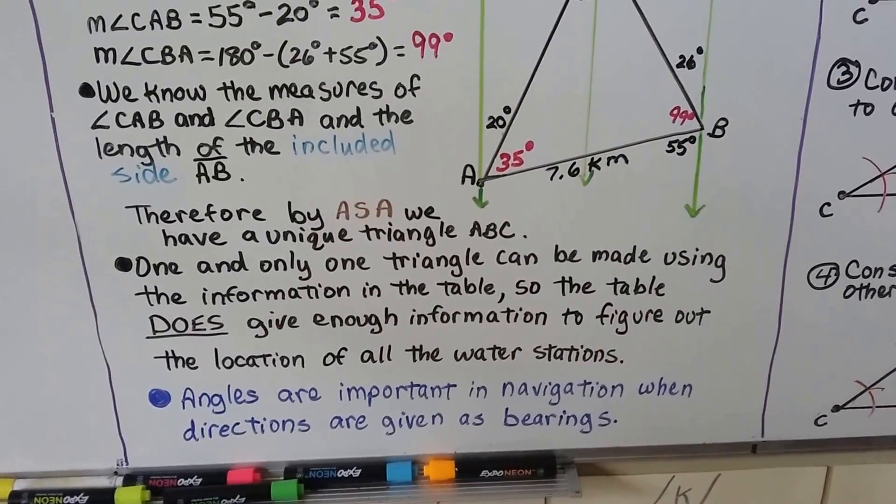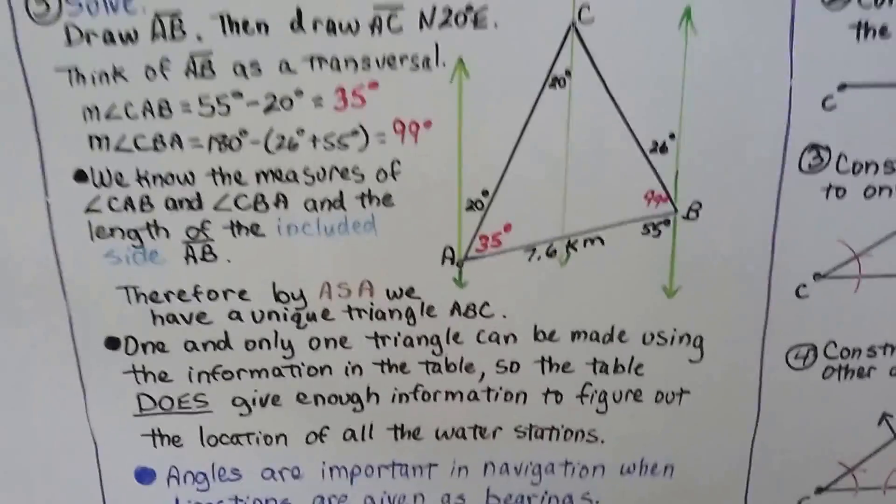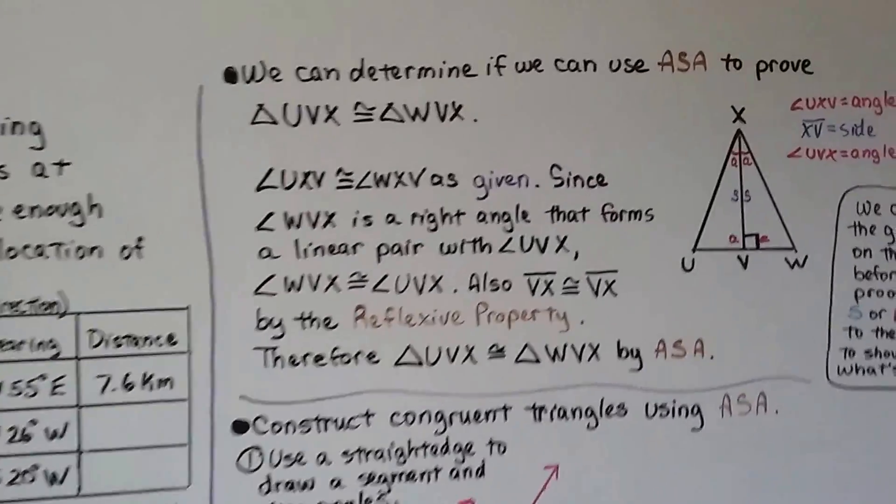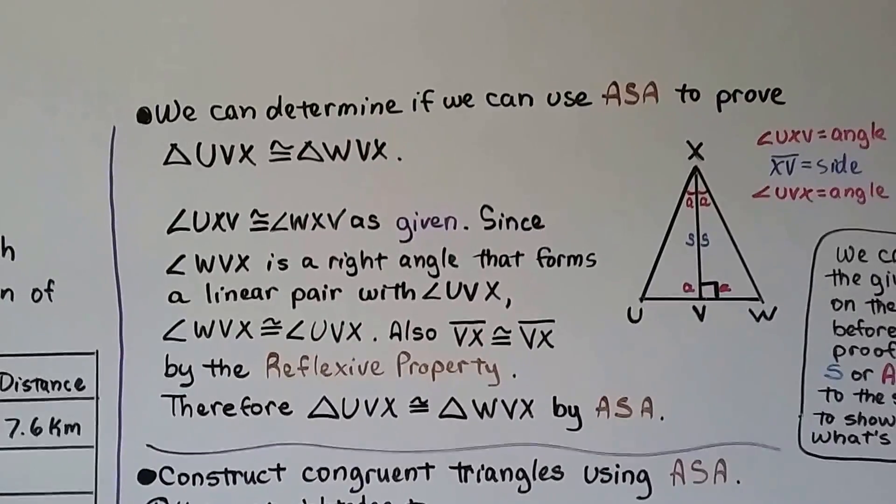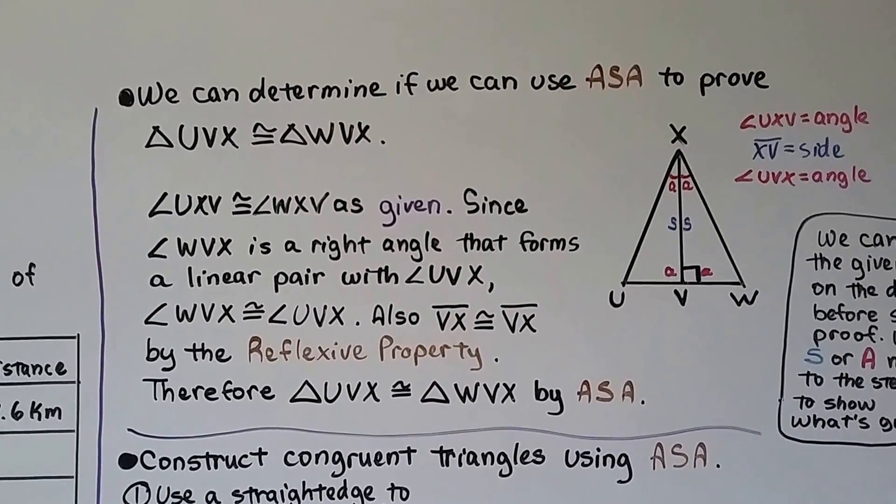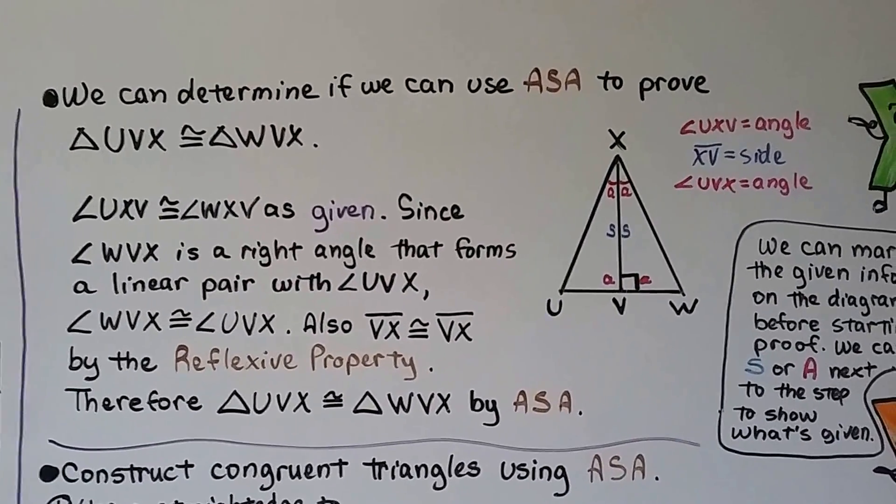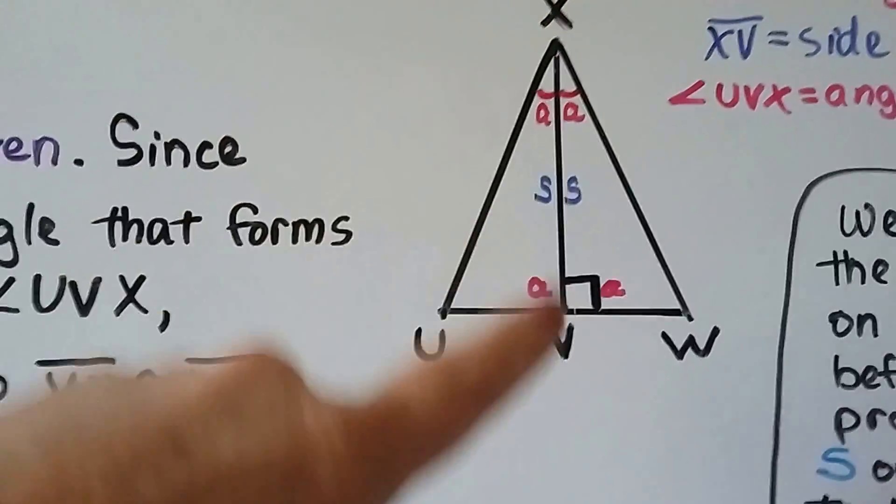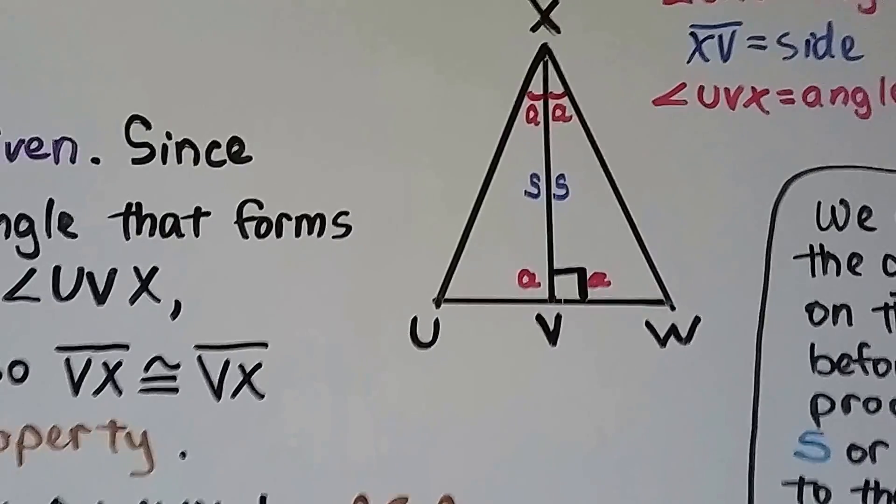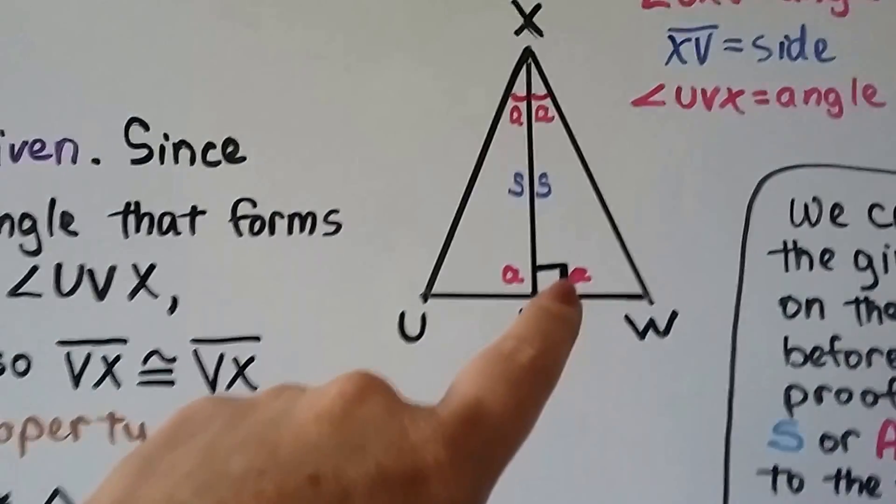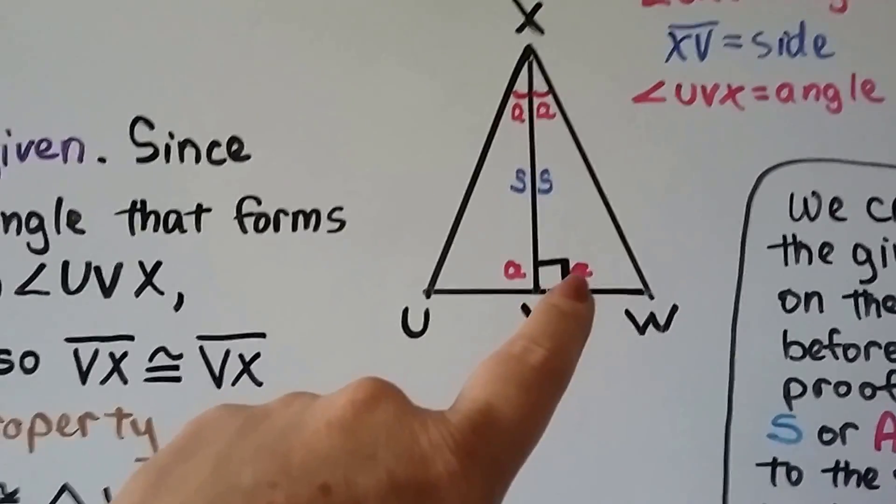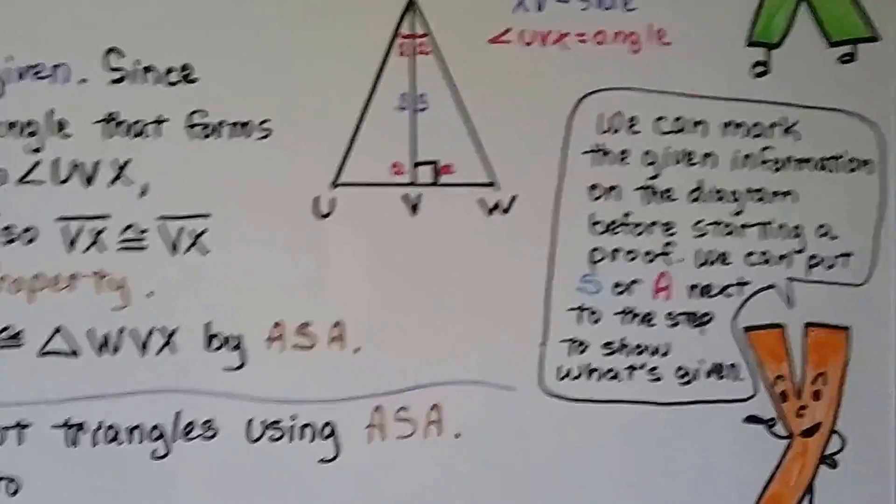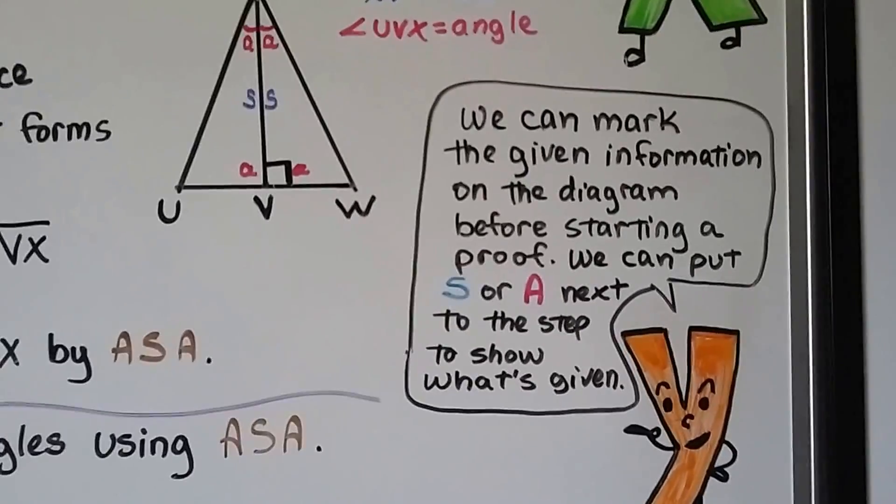Angles are important in navigation when directions are given as bearings. And we can determine if we can use ASA, angle-side-angle, to prove triangle UVX is congruent to triangle WVX. We can see there's a line coming down the middle that this triangle shares with that triangle. We can also see that angle is congruent to that one, and that's 90 degrees. If that's 90 degrees and this is perpendicular, then that's got to be 90 degrees. So we can mark the given information on the diagram before starting a proof.